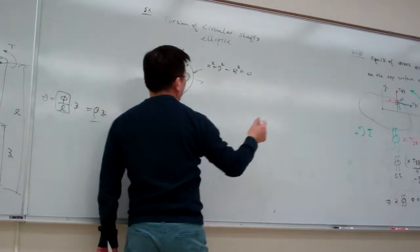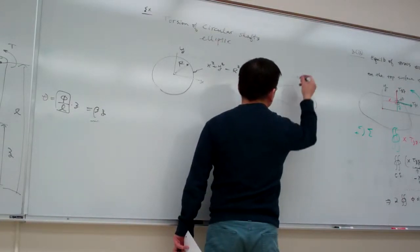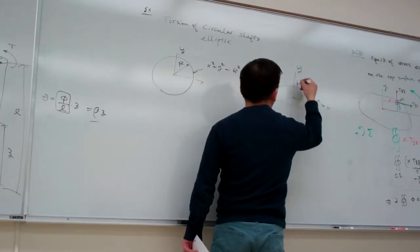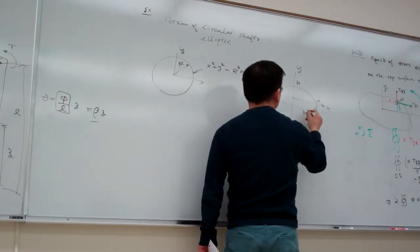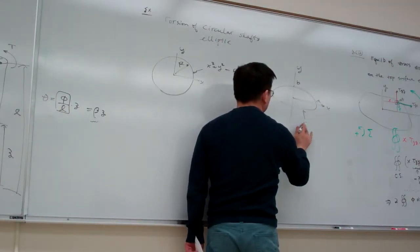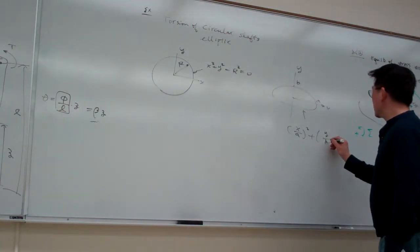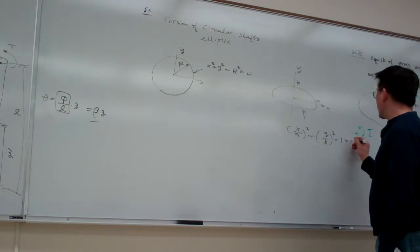So that is radius r. And for elliptic shaft, x1, and here is ab, so that one, this one is x over a squared plus y over b squared minus 1 equal to 0.